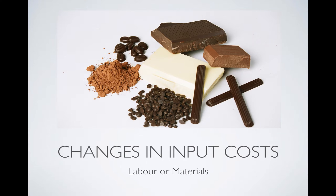Firstly I want to look at input costs. This could be labor — the people that produce our goods and services — or the materials that we use to produce something. If the price of cocoa, an input into the production of chocolate, were to rise, producing chocolate becomes more expensive, therefore supply would decrease. Because it's more expensive to buy the materials to make chocolate, those producers will make less.